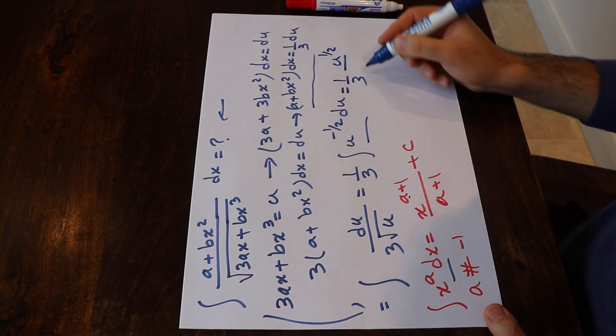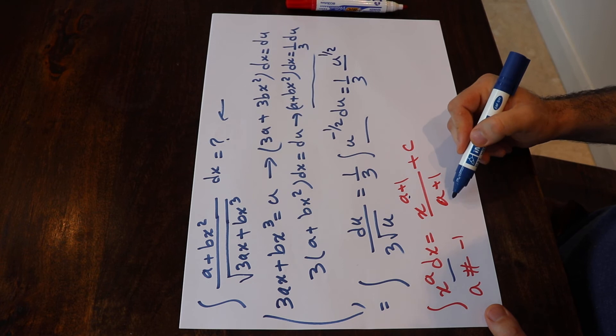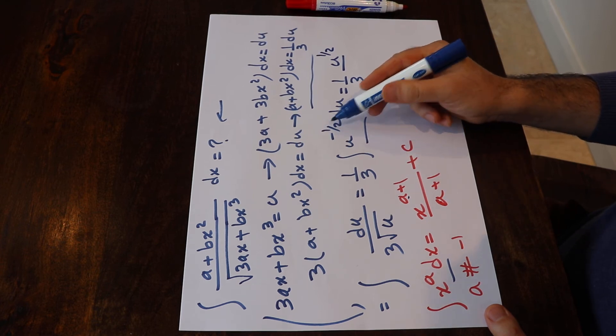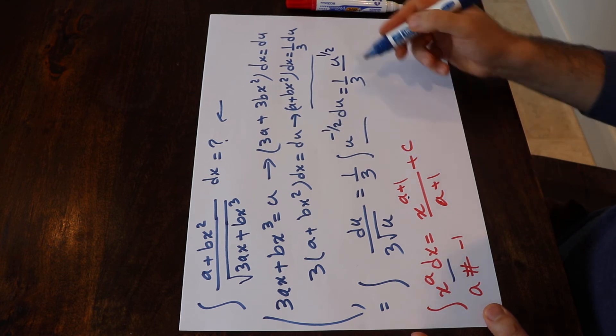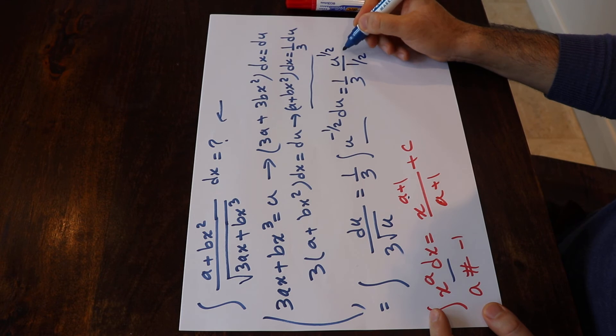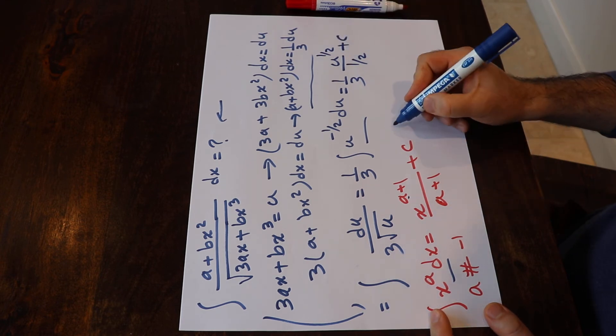That gives a power of 1/2, divided by (a + 1), which is minus 1/2 plus 1, giving 1/2, plus c — the constant of integration.